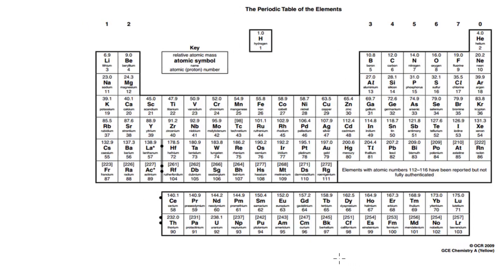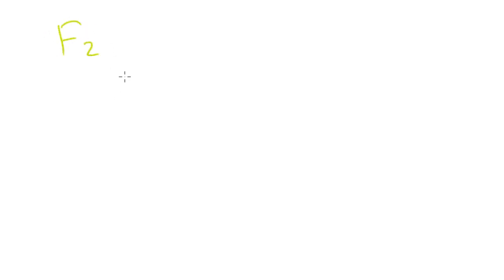If we consider a diatomic molecule which involves two atoms that are basically the same atom, they therefore have equal electronegativity. For example, two fluorine atoms — that would have the formula F₂. If we had two of these and showed the bond between them, we're representing the bond as a line rather than overlapping circles.